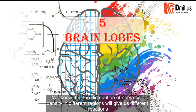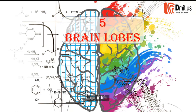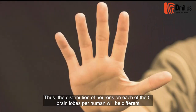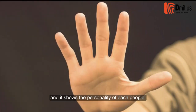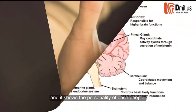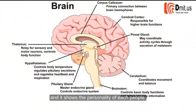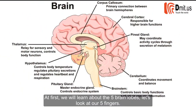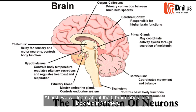We know that the distribution of nerve cell density in different regions will give us different reactions in our life. Thus, the distribution of neurons on each of the five brain lobes per human will be different, and it shows the personality of each person. First, we will learn about the five brain lobes — let's look at our five fingers.